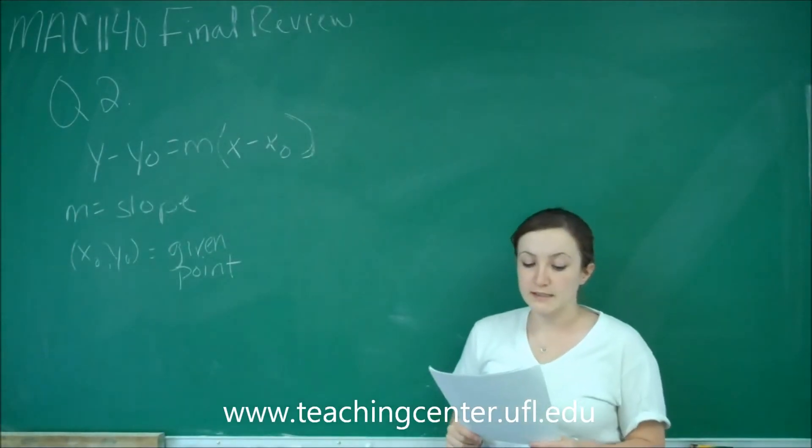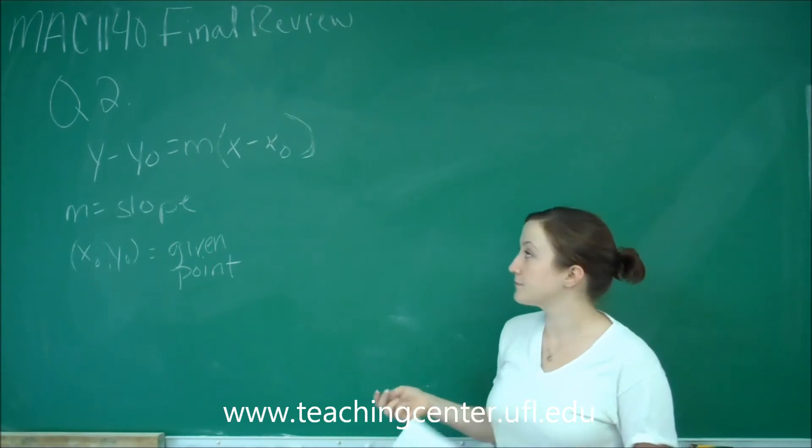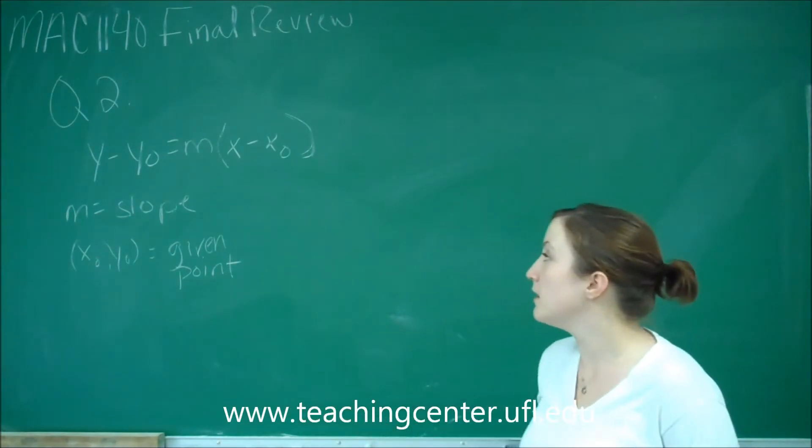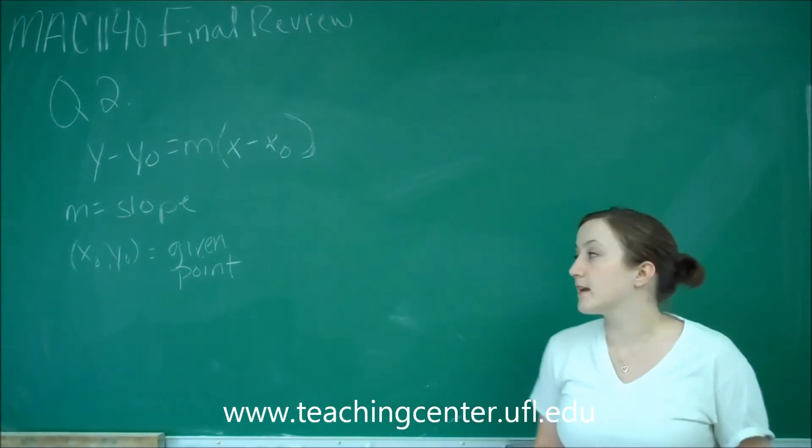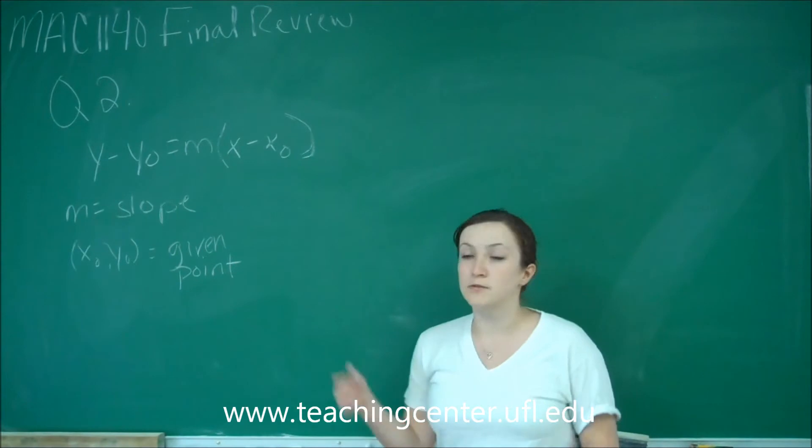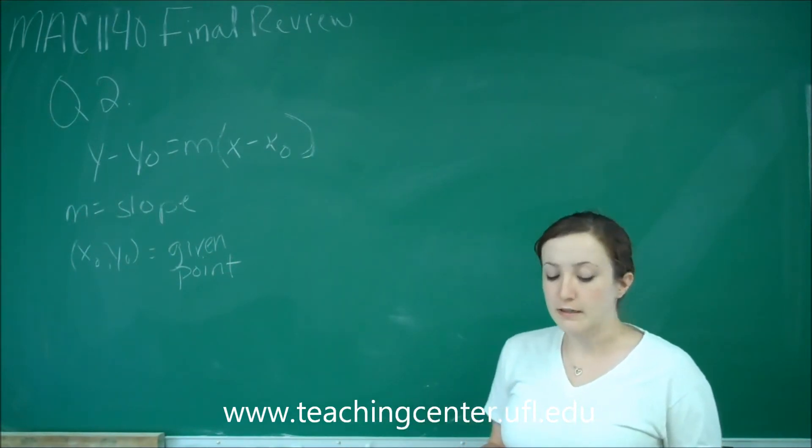This is question number 2. The point-slope formula of a line is y minus y sub 0 equals m times x minus x sub 0, where m equals the slope of the line and x sub 0, y sub 0 is a given point from the information in the question.